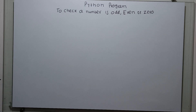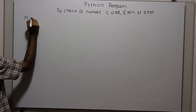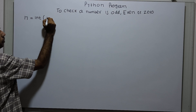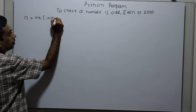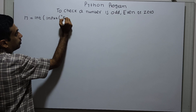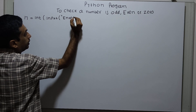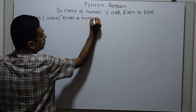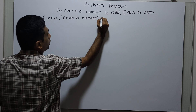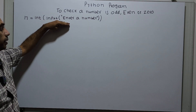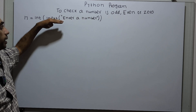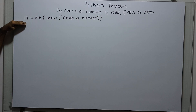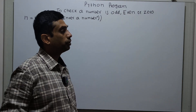I am obtaining input from the user: n = int(input('enter a number')). The input statement displays the string 'enter a number' in the console. When the user enters a number, the input statement receives it as a string, the int() function converts it to an integer, and stores it in the variable n. Now we are going to check if a number is odd, even, or zero using if, elif, else.